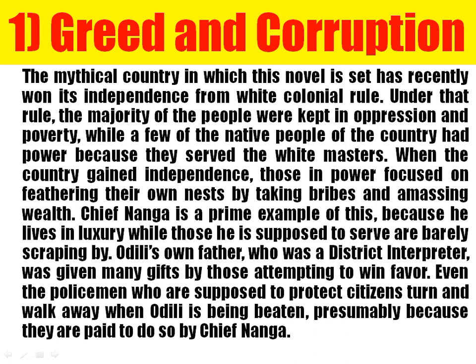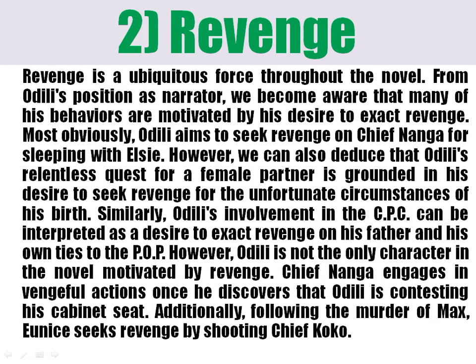When the country gained independence, those in power focused on feathering their own nest by taking bribes and amassing wealth. Chief Nanga is a prime example of corruption. Odili's father was also part of these corrupt practices — he was the district interpreter and at the same time the chairman of the political party. Chief Nanga gave him money, so he did not want his son Odili to contest against Chief Nanga. Corruption is a recurrent motif throughout the entire novel, from beginning to end. We even see it in Chief Nanga's sexual affairs with Agnes, Seka, and others, and his plan to marry a second wife, Edna.